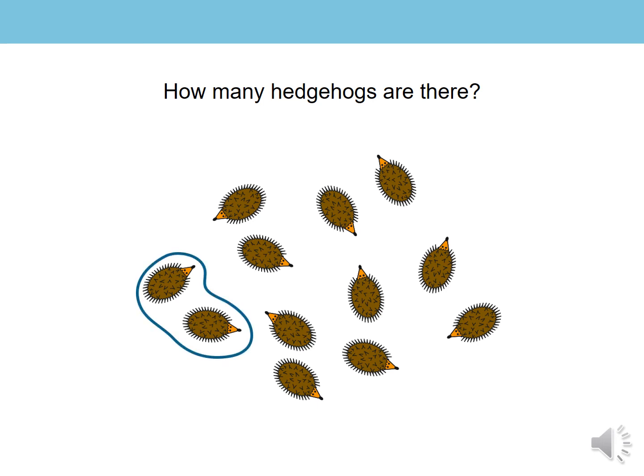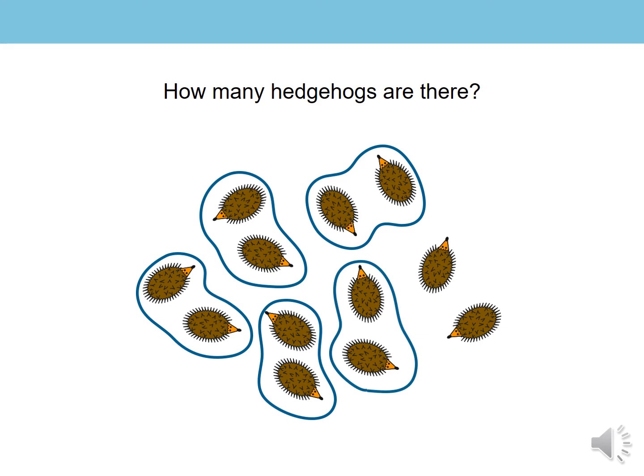One group of two, two groups of two, three groups of two, four groups of two, five groups of two, six groups of two. I have six groups of two, six equal groups. They're equal because the same amount are in each group. Can you count how many hedgehogs I have all together now?